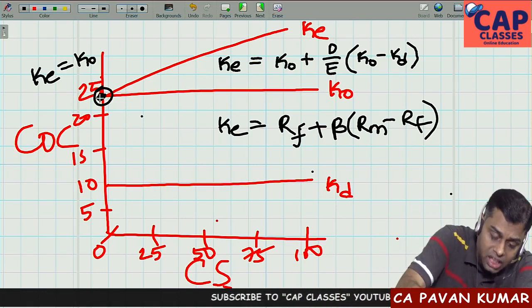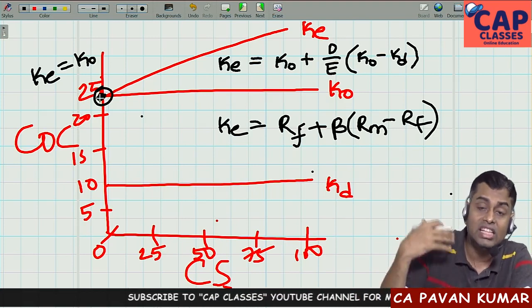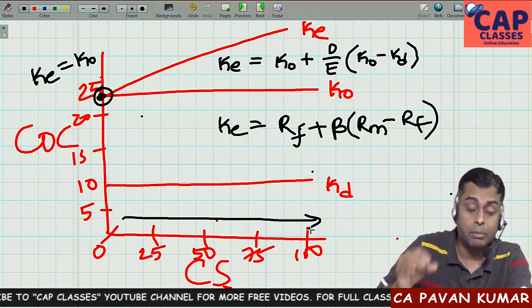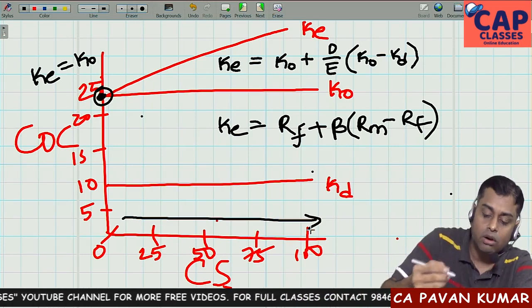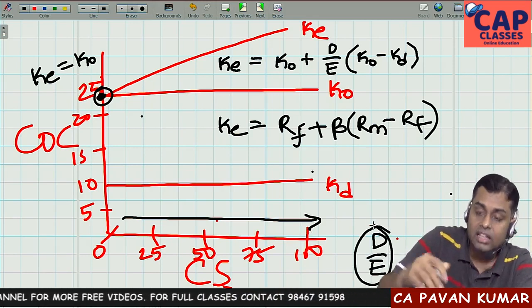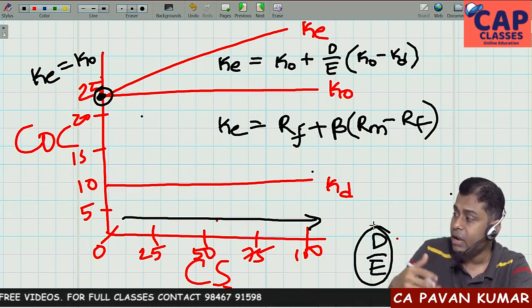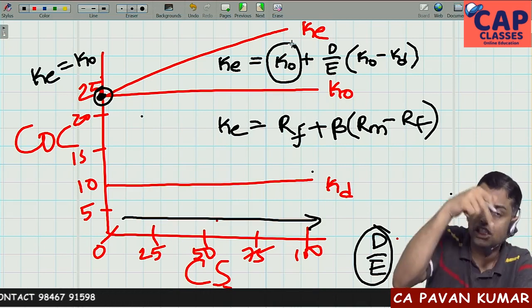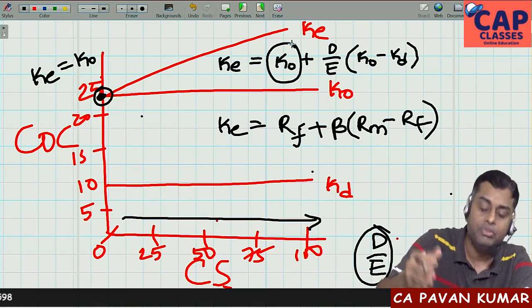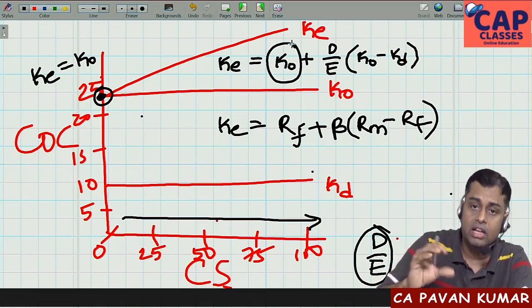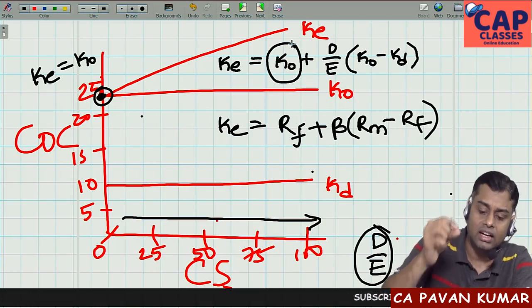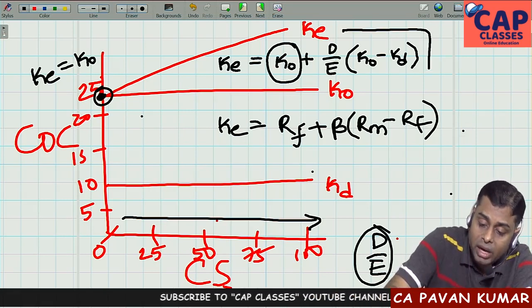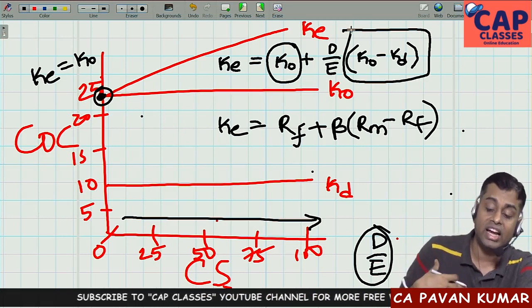As an equity shareholder, when the company is unlevered, KE equals KO. When the company increases its use of debt and becomes levered, my risk increases. The risk the equity shareholder takes is captured by the debt-equity ratio — the higher the debt, the higher the risk. So D/E is my risk. The risk-free base is KO (when there is no financial risk), and (KO − KD) is the risk premium I seek for taking on that financial risk, analogous to (RM − RF) in CAPM.